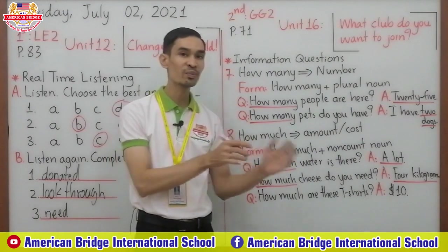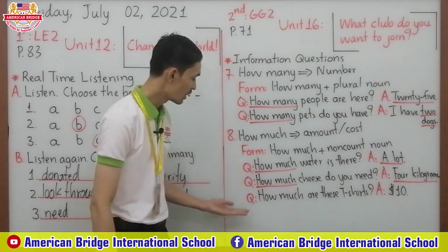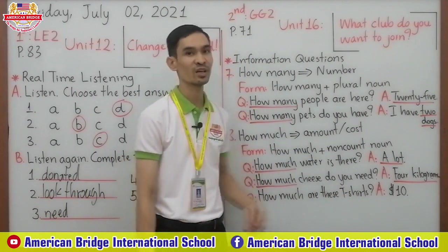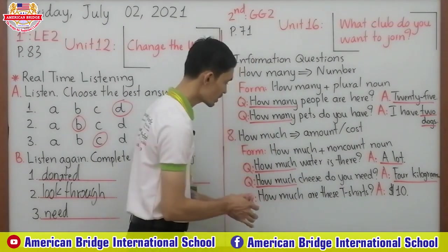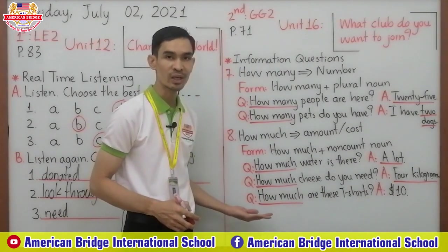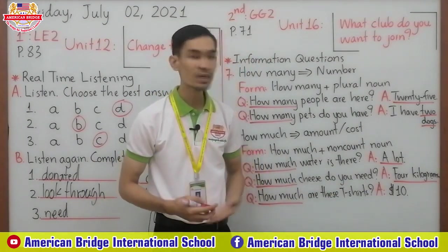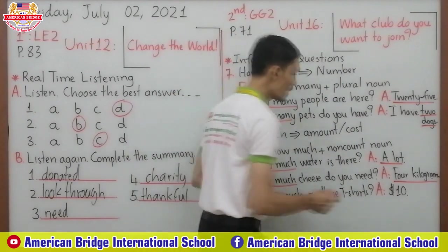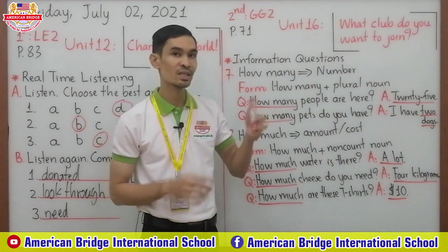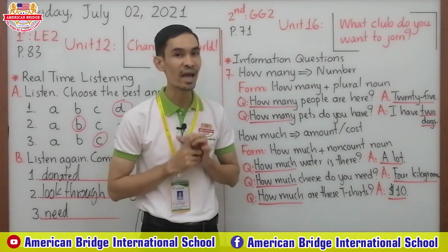You can also use 'how much' plus a verb to ask for the price or cost. For example: 'How much are these shirts?' — here we don't use a non-count noun, and the answer is the price: ten dollars. Another example: 'How much is this marker?' — it's one dollar. One dollar is the cost of something.